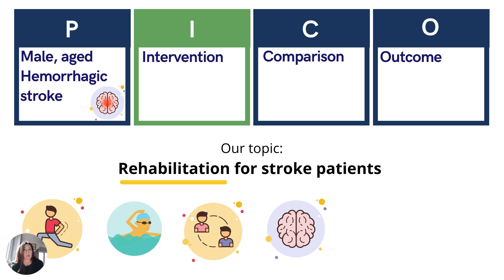Since we're targeting functional mobility, we're going to use physical therapy as our intervention. Physical therapy itself is also a very broad category, so we could narrow that down further by looking at a specific type. We could do dryland therapy or aquatic therapy. Under dryland therapy, we could look at options like overground gait therapy — and that's what we'll pick. So our intervention will be physical therapy, dryland therapy, and overground gait therapy, or some variation therein.